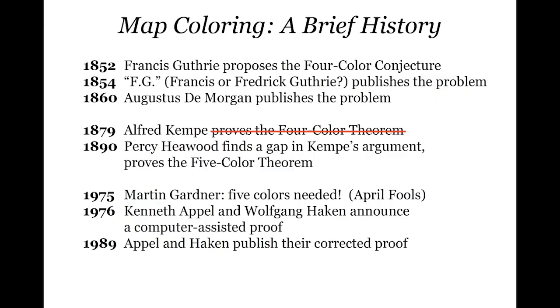In 1989, Appel and Haken published a corrected proof. It was all double-checked by hand, but it still didn't cast any insight into the question. Even now, where people mostly accept that this was a proof and we really do know the four color theorem is true, it's a very disappointing kind of proof. The initial idea allowing you to reduce it to a finite number of cases has some nice stuff, but the proof itself doesn't give you any insight into why the number should be four — it just sort of is.